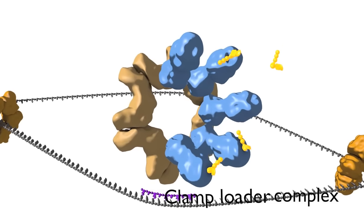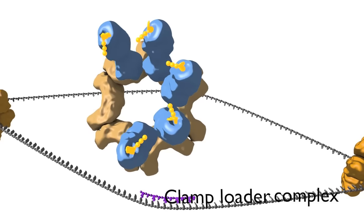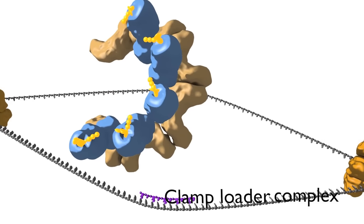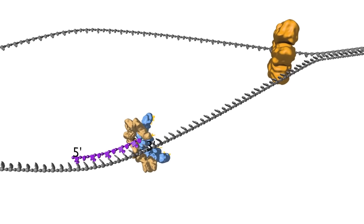The five protein clamp loader complex binds to the sliding clamp and binding of ATP allows opening of the sliding clamp ring. The opened ring then encircles the template primer junction at the three prime end of the primer.